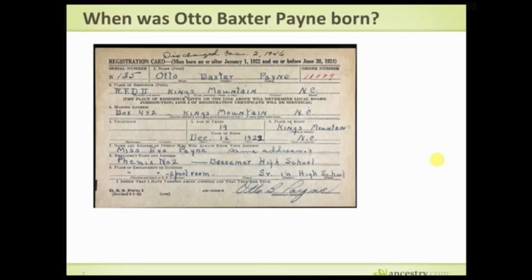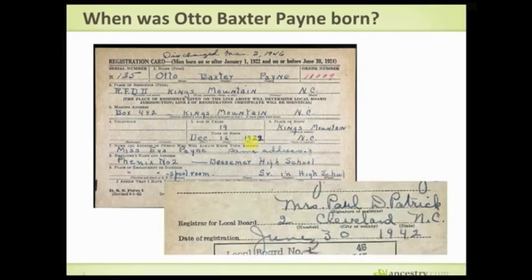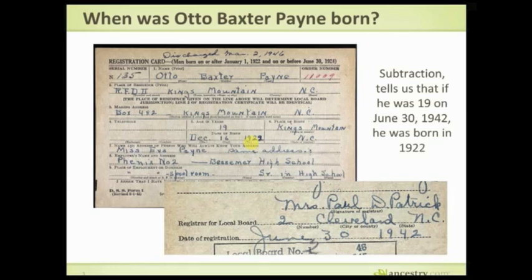So let's look at the example. We're going to look at the case of Otto Baxter Payne and when was he born. The first record I might pull up — and these are beautiful images — is his registration card for World War Two. It says he was 19 years old and was born December 16th, 1922, though that actually looks like it could be 1922 or 1923. Looking at the second card, the date is June 30th, 1942. Basic subtraction tells us: if he was 19 on June 30th 1942, he was born in 1922.